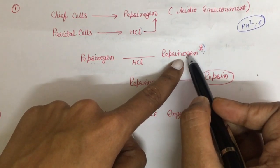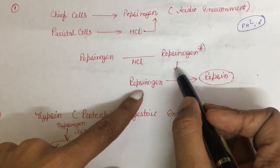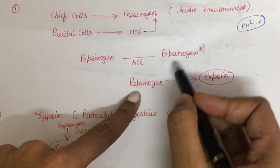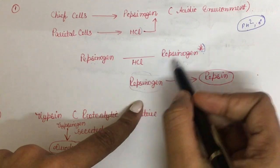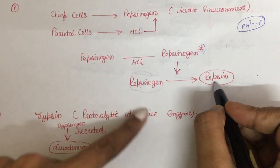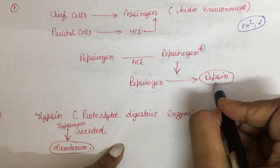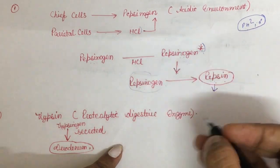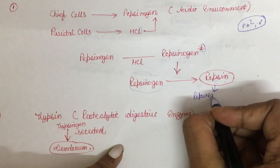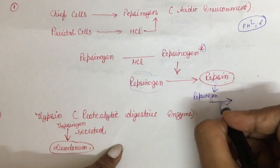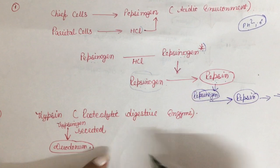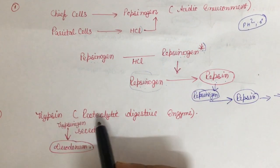The HCl converts pepsinogen into a slightly active form. This slightly active form of pepsinogen then acts upon other pepsinogen molecules, converting them into pepsin. Pepsin is catalytic in nature and will further drive the cascade of activation of other pepsin molecules. This pepsin continues to act upon other pepsinogen molecules, and the process continues.